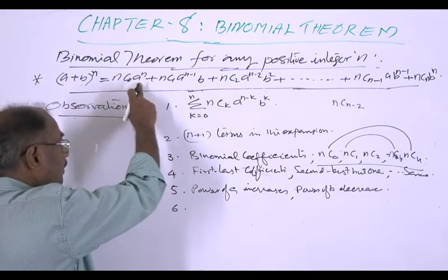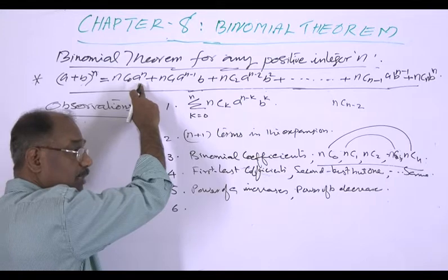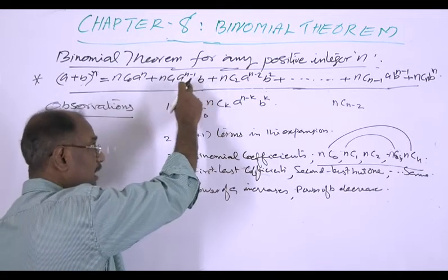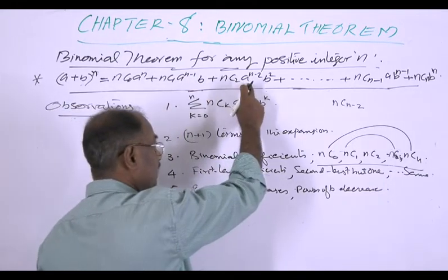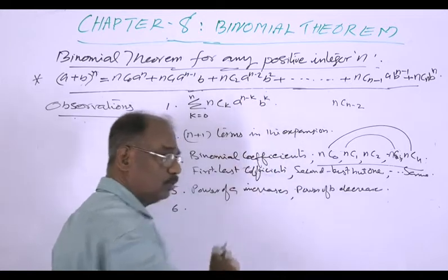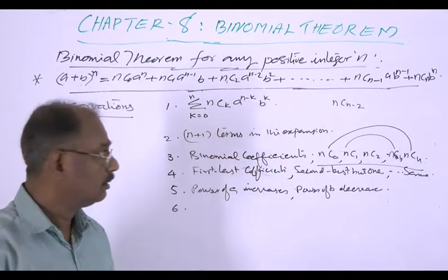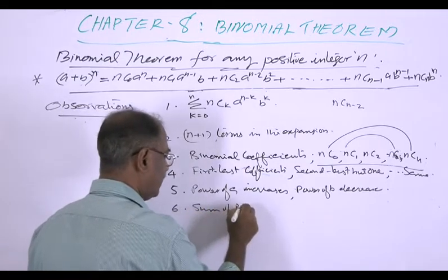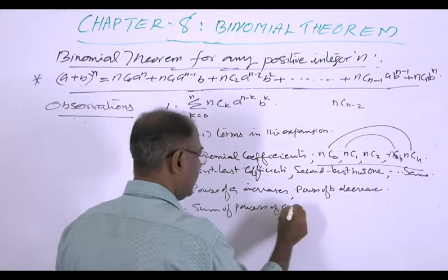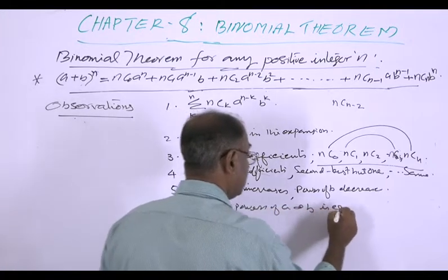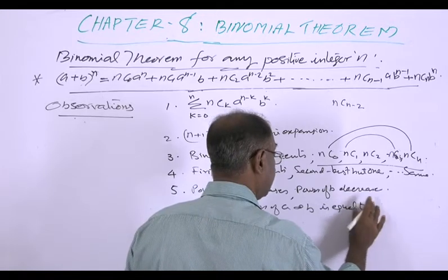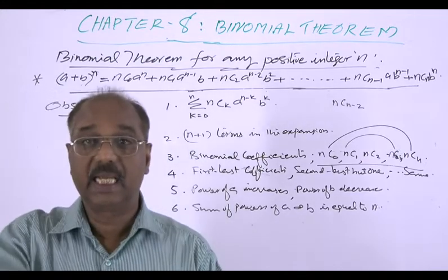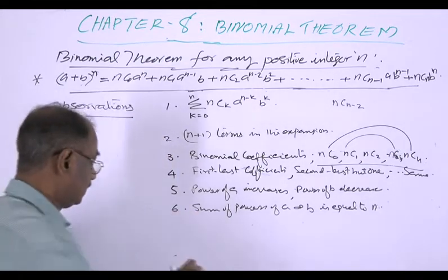In the first term, power of A is n and power of B is 0, so n + 0 = n. In the second term, power of A is n−1 and power of B is 1, so (n−1) + 1 = n. In the third term, n−2 + 2 = n, and so on. The sum of powers of A and B is always equal to n.